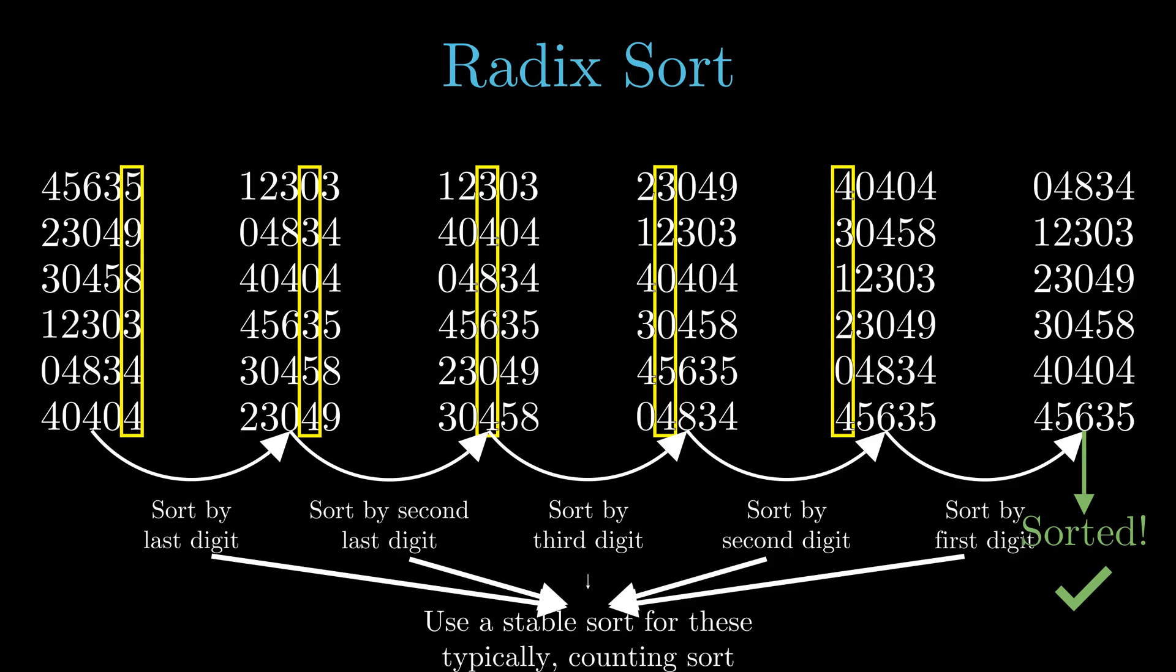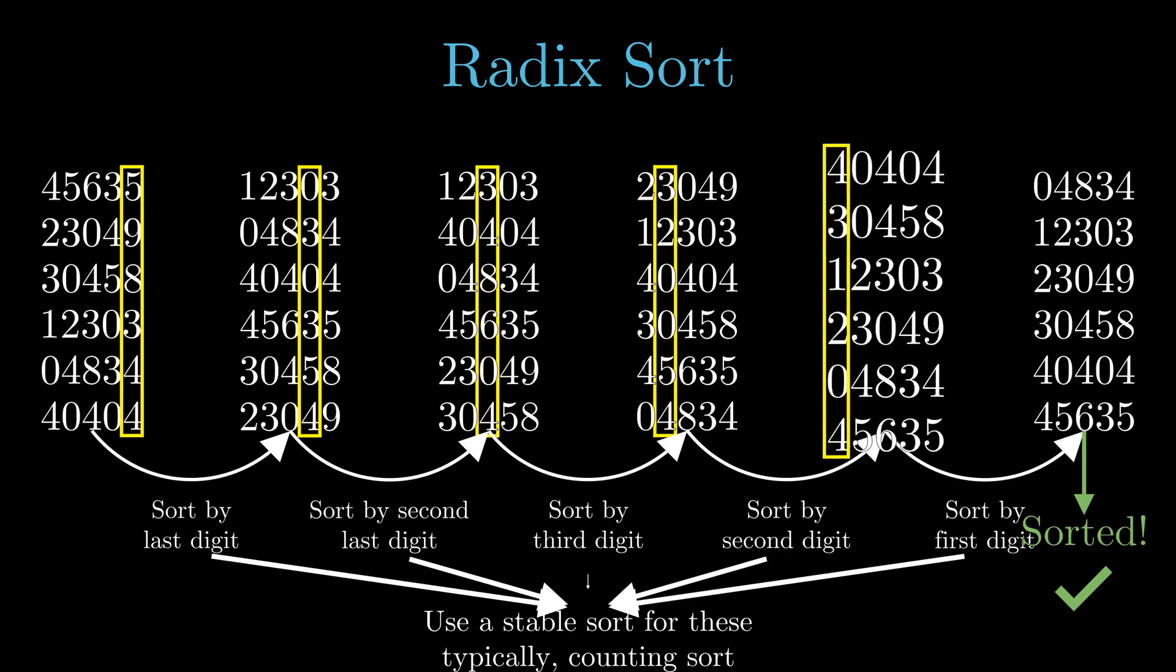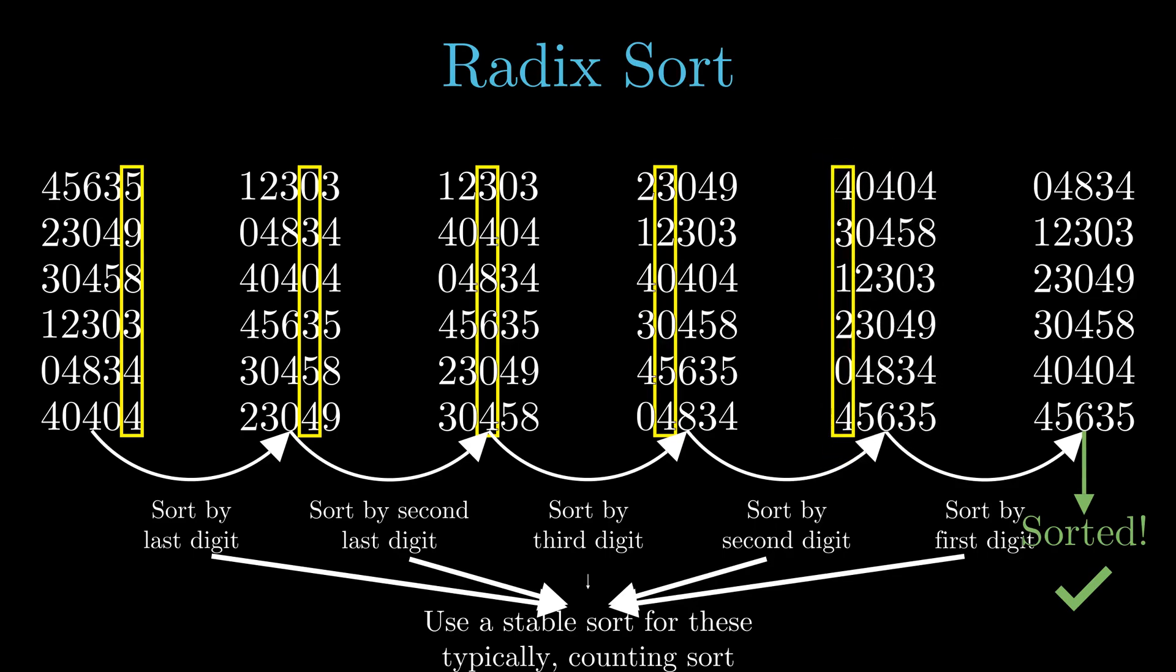To have an idea why, see that in the list before the last sort, when the numbers were sorted by the last four digits, 40404 was before 45635. This is because 0404 is less than 5635.